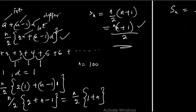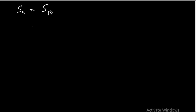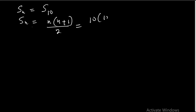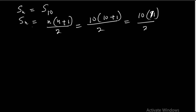Now let's apply the formula. If S of n equals S of 10, we said S of n equals n into n plus 1 over 2. This gives us 10 into 10 plus 1 over 2, which is 10 into 11 over 2. The 2 cancels to give 5, so 5 times 11 equals 55.